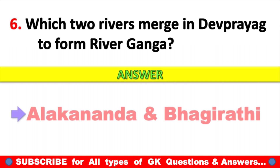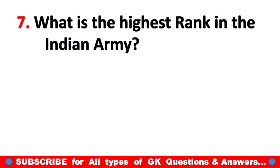Question 6: Which two rivers merge at Dev Prayag to form the river Ganga? Answer: Alaknanda and Bhagirathi rivers.